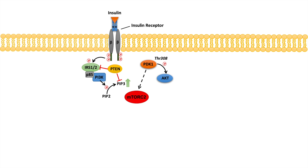PDK1 will, through a couple of steps, activate mTOR complex 2. mTOR complex 2 will itself phosphorylate AKT as well, specifically at serine 473.